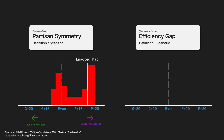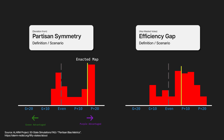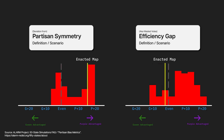The efficiency gap measures how many votes were wasted for each party in a state. Every vote over 50% plus one and under 50% — the votes for the losing candidate and the excess votes for the winning candidate — is considered wasted. That difference between wasted votes for the green and purple parties can measure if votes are packed into a district or cracked across several districts.